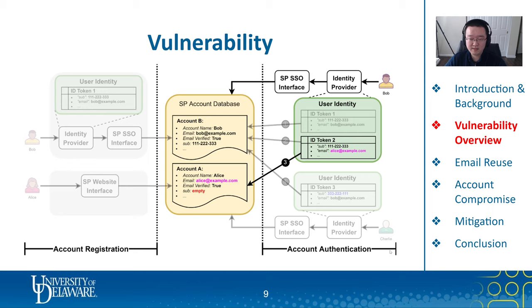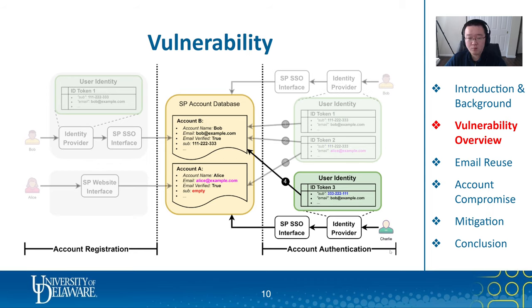It seems that this case doesn't make sense — like, who would ever do this? But our work indicates that a large number of service providers are actually allowing this to happen. Our work also reveals another troubling case 4. In this case, another person, Charlie, tries to authenticate himself with ID token 3. This token contains Charlie's user ID 333222111 and email address bob@example.com. The service provider receives token 3 and realizes that there's no account with a matching sub field, but account B has the same email address as token 3. In this case, the service provider may allow Charlie to access Bob's account. This is also wrong.